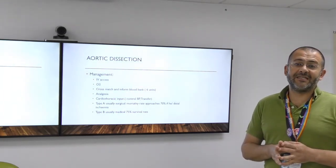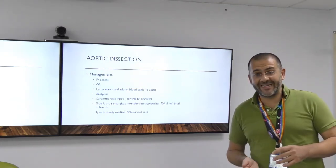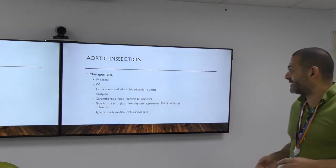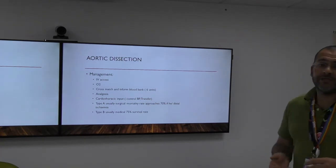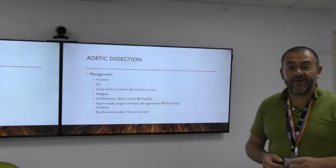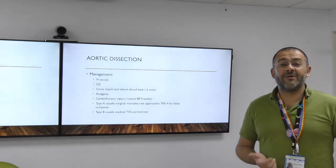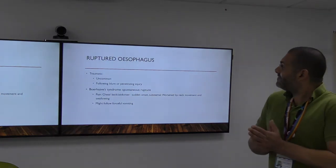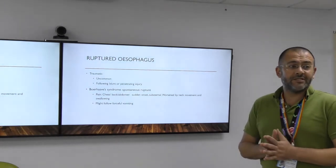Stanford Type A, involving the ascending aorta, is usually surgically managed but has a high mortality rate approaching around 70% if associated with distal ischemia. Type B is usually medically managed with a good 75% survival rate, though the 10-year survival rate is around 40%. We don't get to see this that often, but we should always keep it in mind.